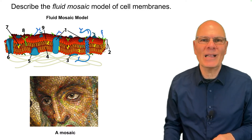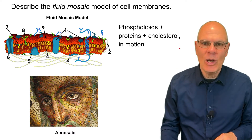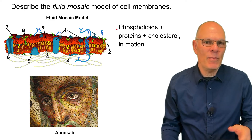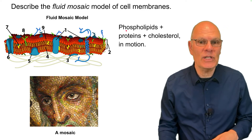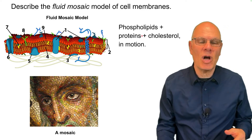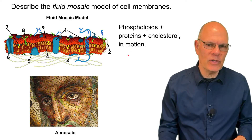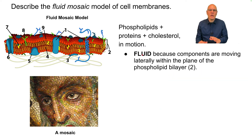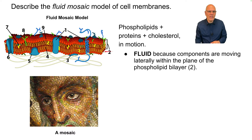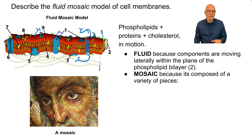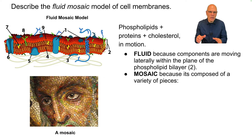Describe the fluid mosaic model of cell membranes. This model posits that the membrane is composed of phospholipids plus proteins plus cholesterol in motion. It's called fluid because the components are moving around laterally within the plane of the phospholipid bilayer. It's a mosaic because it's composed of a variety of pieces, in the same way as a mosaic tile is composed of different tiles with different colors put together to form art.